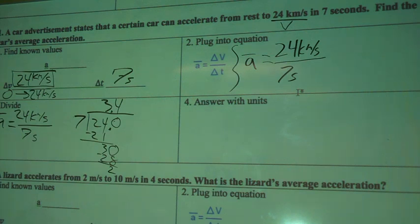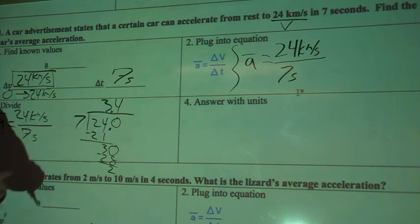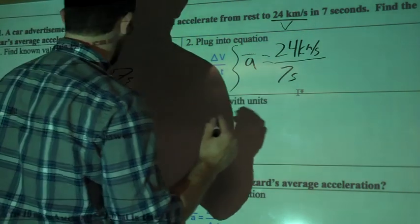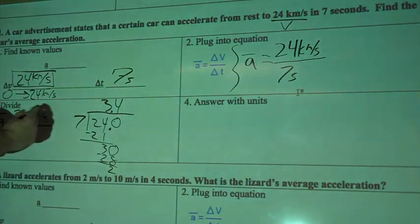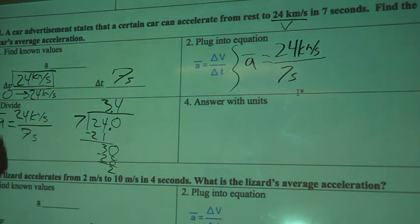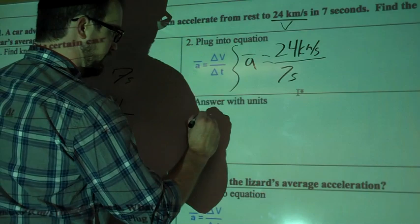So now we have our acceleration is equal to 24 kilometers per second, divided by 7 seconds, and we got 3.4. Okay, now we're going to write our answer with units over here. So I'm going to keep all units right here, and I'm just going to have 3.4 on the top. I'll show you what I mean. So we'll have 3.4, so average acceleration equals 3.4,